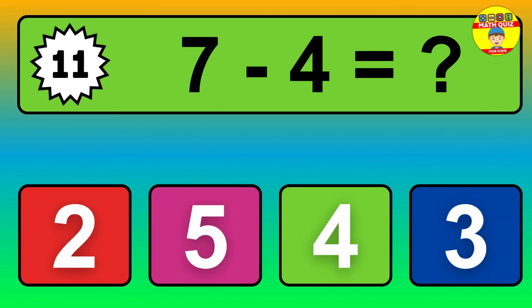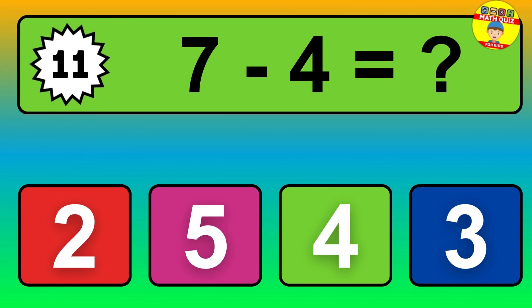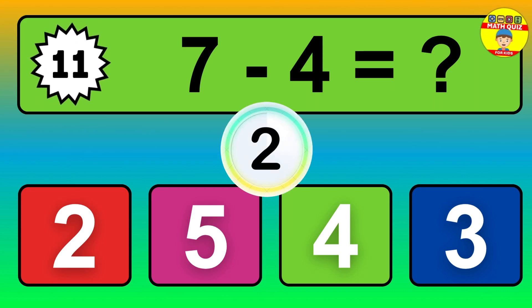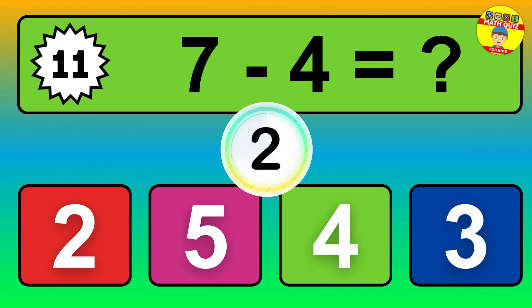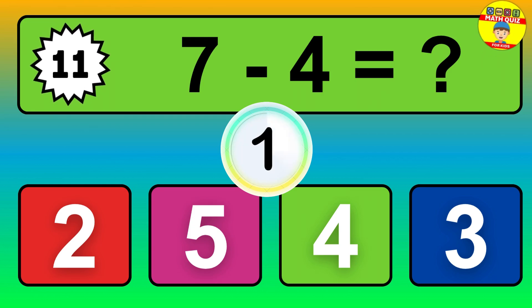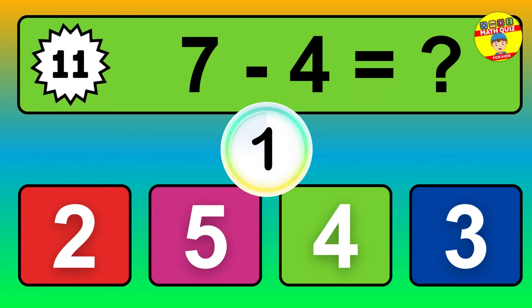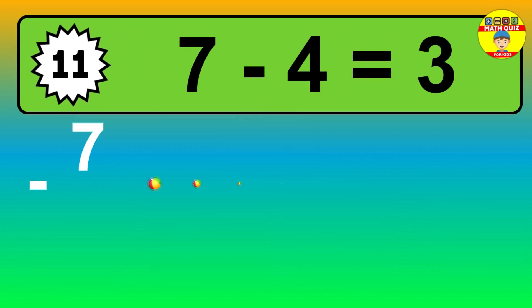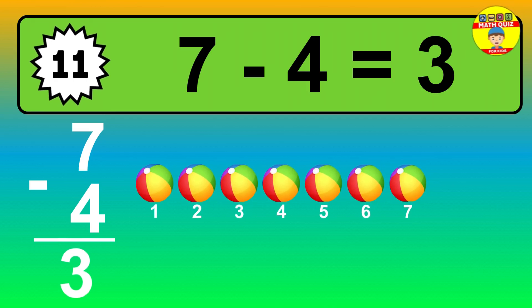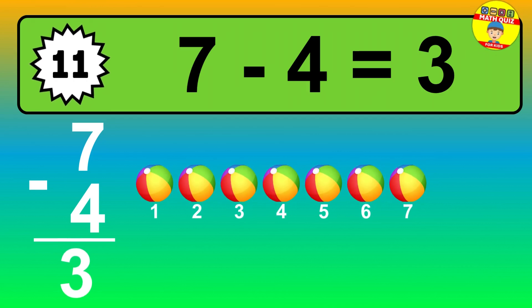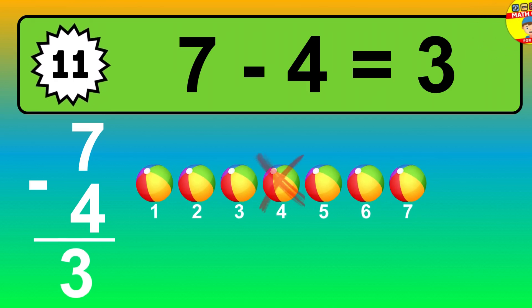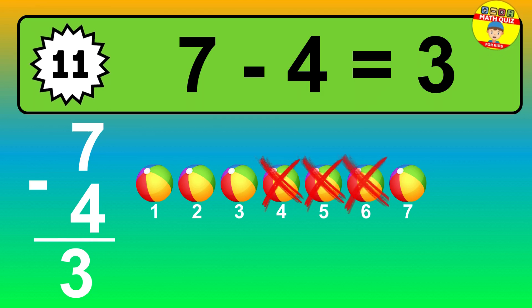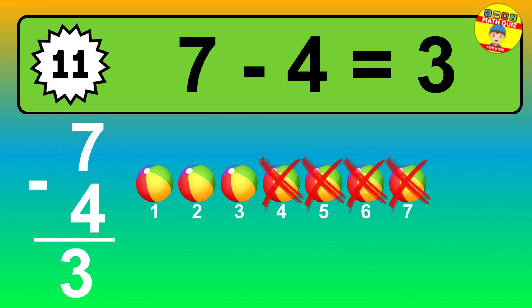Question 11. 7 minus 4 equals what? The answer is 7 minus 4 is 3. Let's count it. 1, 2, 3.